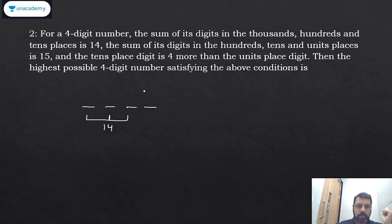So sum of thousands, hundreds, and tens places is 14. Sum of hundreds, tens, and unit place is 15. And tens place is 4 more than unit place. So we start with this. Suppose your unit place is 1, so tens place would have been 5. Now their sum is 15, so 9 comes here.